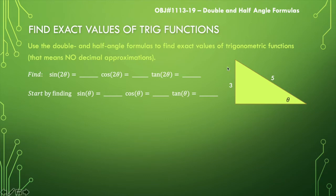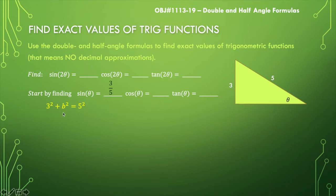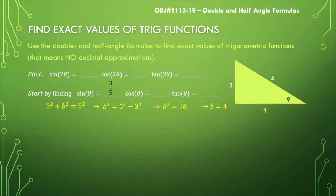Sine of theta is easy because we're given the opposite and the hypotenuse, so sine of theta equals three over five. Now I'll use the Pythagorean theorem to find the missing side: three squared plus b squared equals five squared, so b squared equals five squared minus three squared, which equals 16, and b equals four. With b equal to four, cosine of theta is four over five, and tangent of theta is three over four.